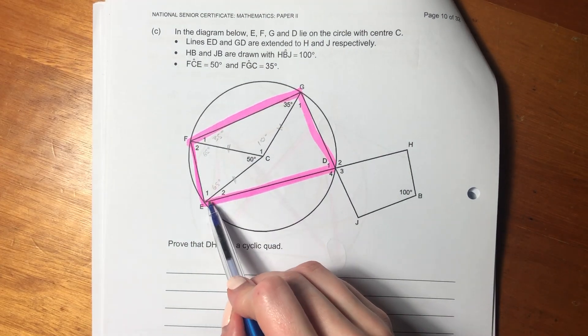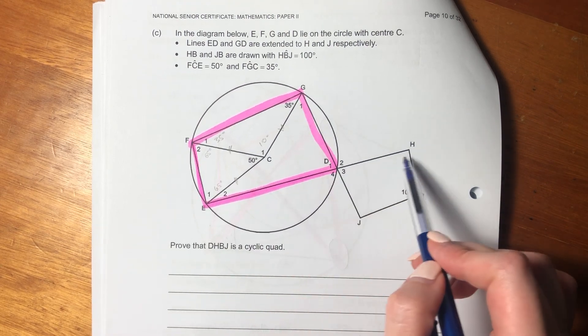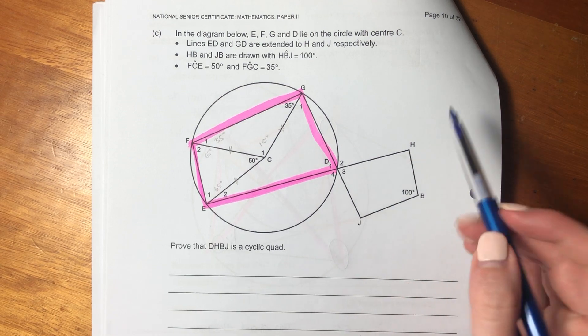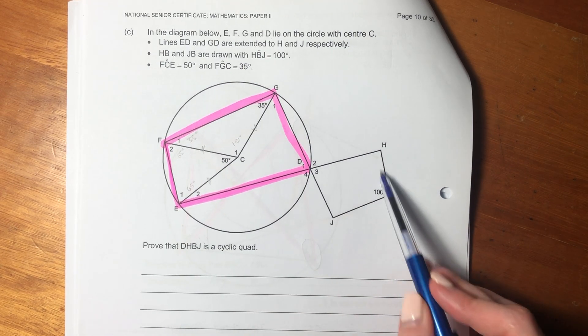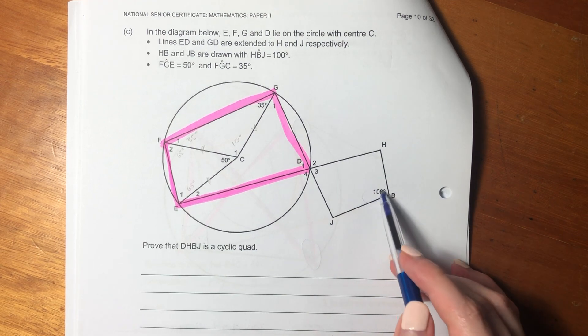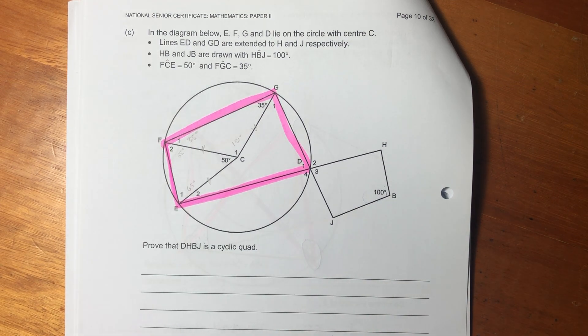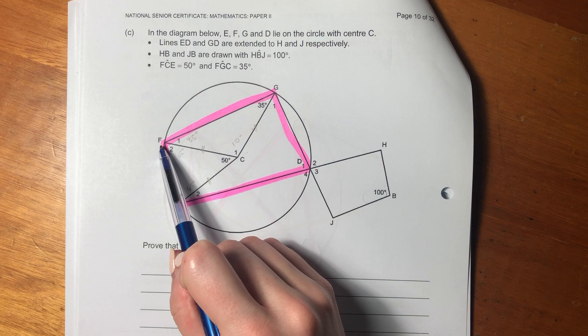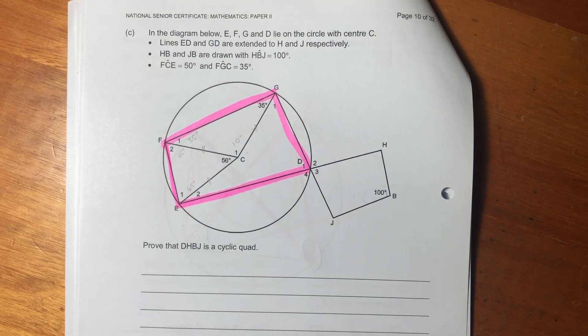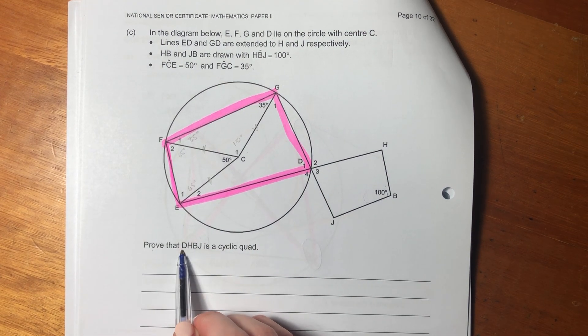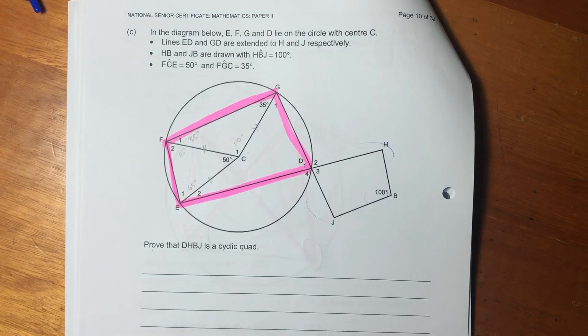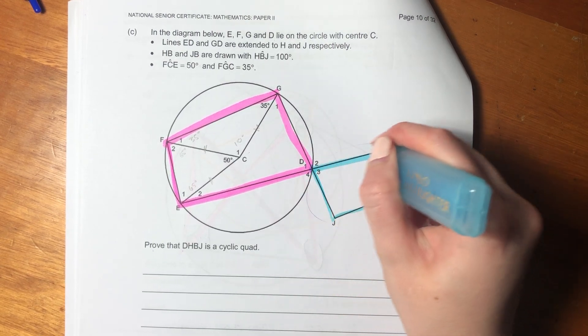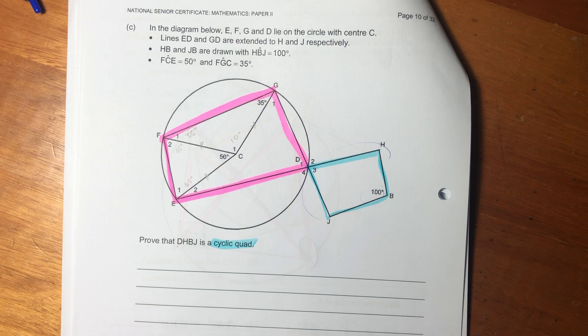Lines ED and GD are extended to H and J respectively. HB and JB are drawn with HBJ being 100 degrees. So we're given this 100 degrees. It says that FCE equals 50 and FGC equals 35. So we're given a bunch of stuff. Now, it says prove that this guy here is a cyclic quad. That's what they're asking us to do.